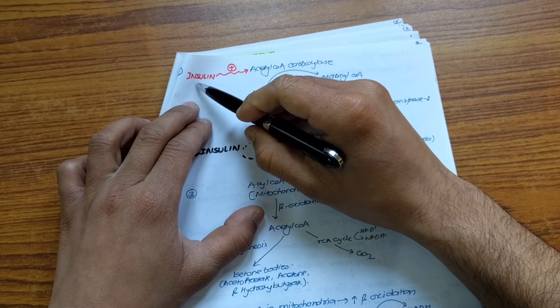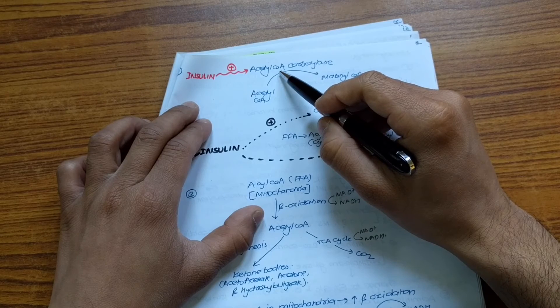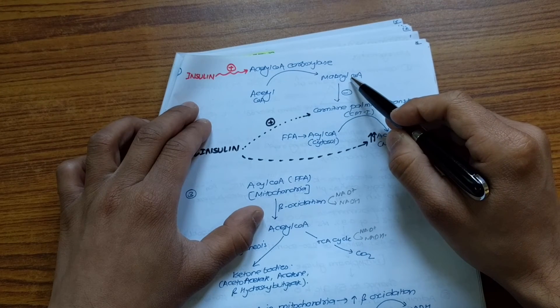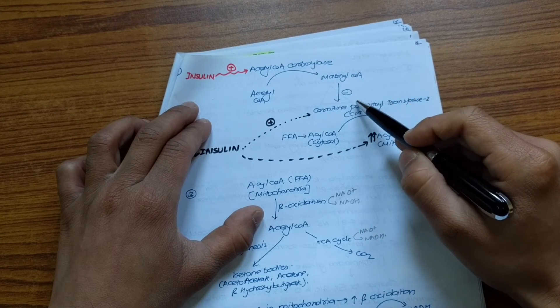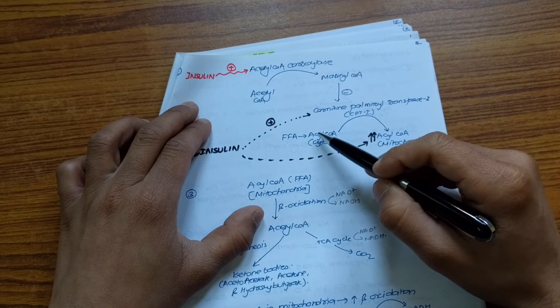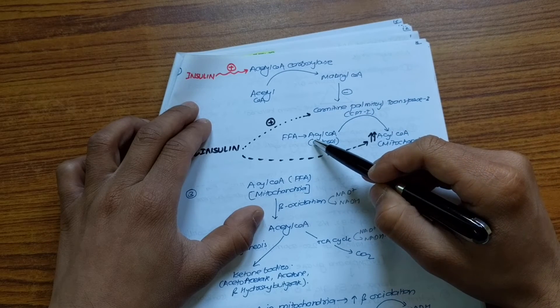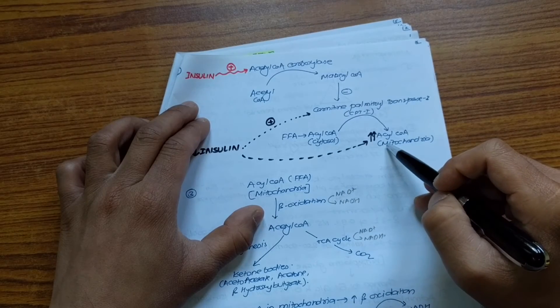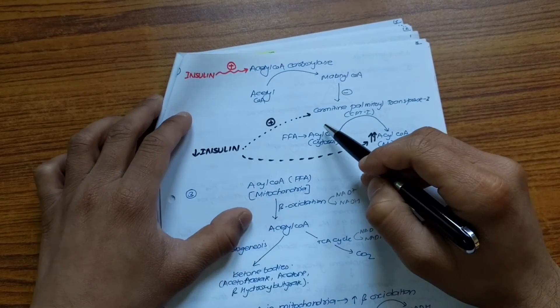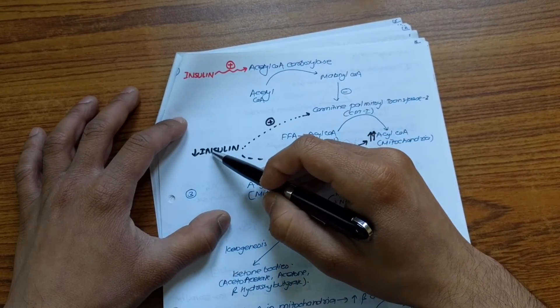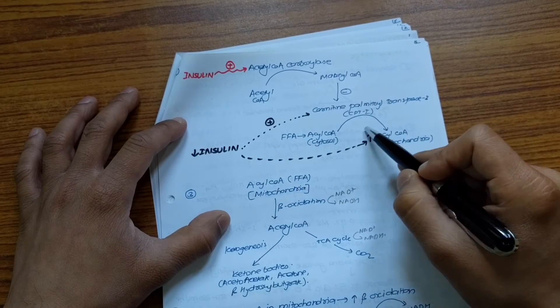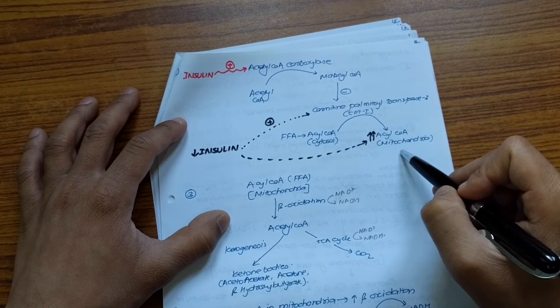The job of insulin was to stimulate the enzyme acetyl-CoA carboxylase, and this will increase the amount of malonyl-CoA and this will continue inhibiting the enzyme CPT-1. This will decrease the translocation of acetyl-CoA formed in the cytosol into the mitochondria. But in case of type 1 diabetes mellitus, insulin will be low and this will ultimately increase the amount of acetyl-CoA into the mitochondria.